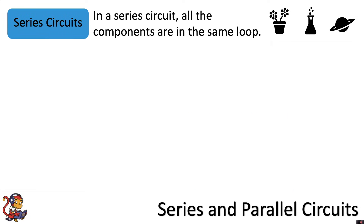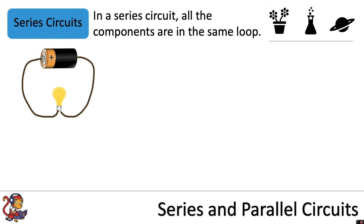In this video we're going to look at series and parallel circuits. In a series circuit all the components are in the same loop. So with one lamp and a cell all in one loop of wire, the circuit diagram would look like this.